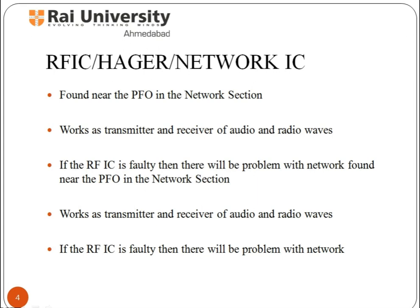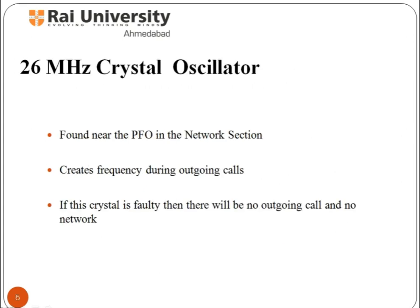Network IC is an integrated circuit. Electrical power is distributed to the components of the chip over a network of conductors on the chip. Power network design includes the analysis and design of such networks. It is found near the PFO in the network section. Next, 26MHz Crystal Oscillator: Crystal oscillators are used in communication devices such as cell phones.